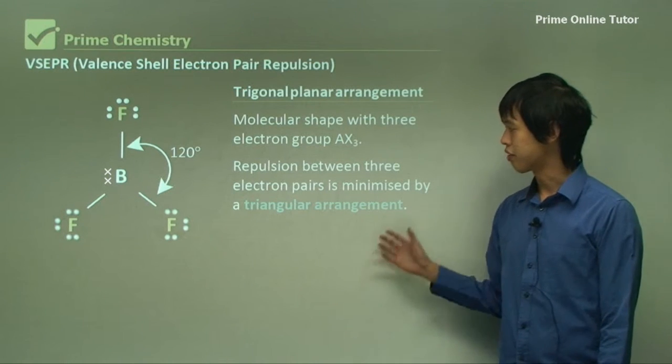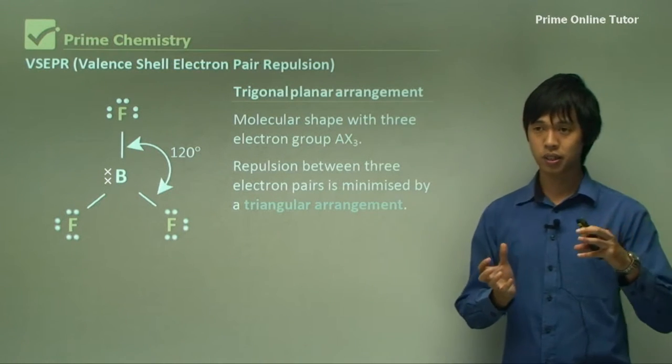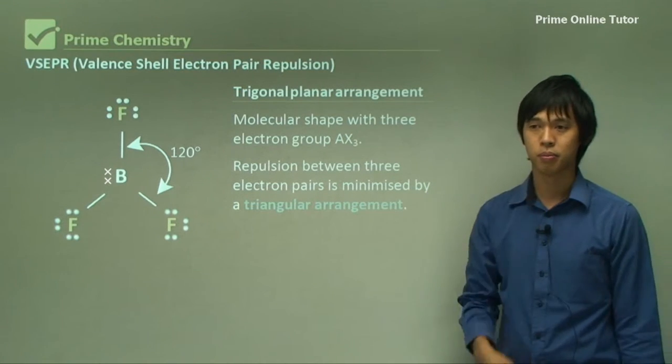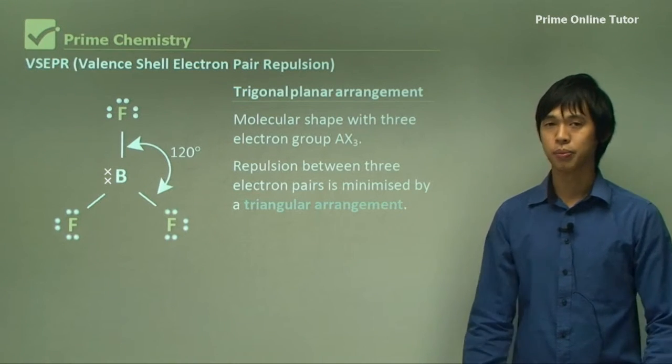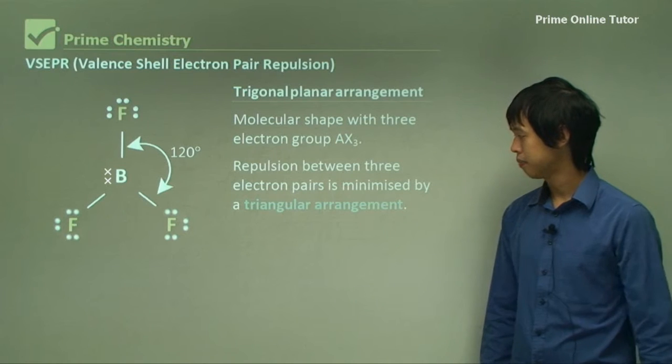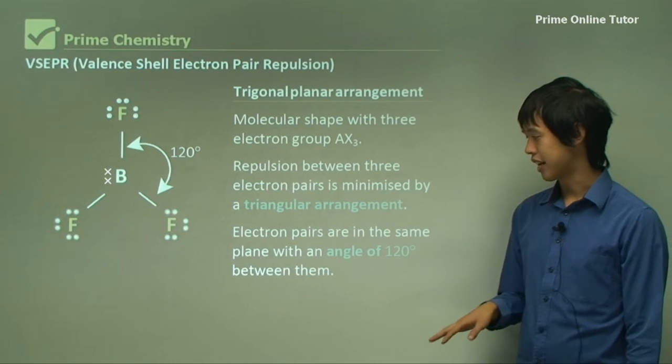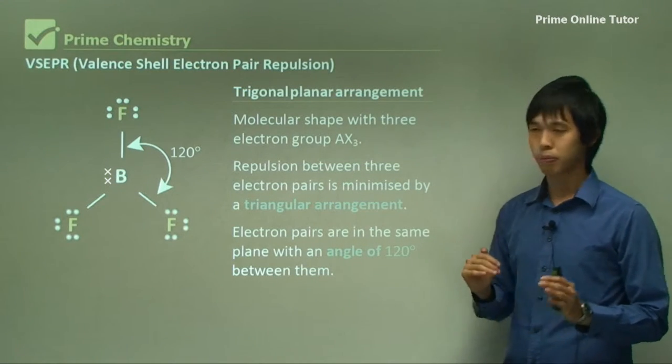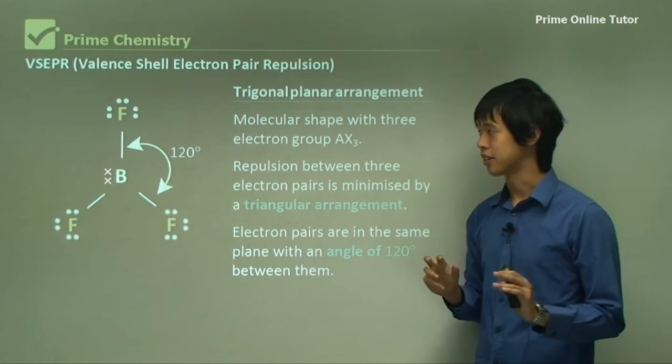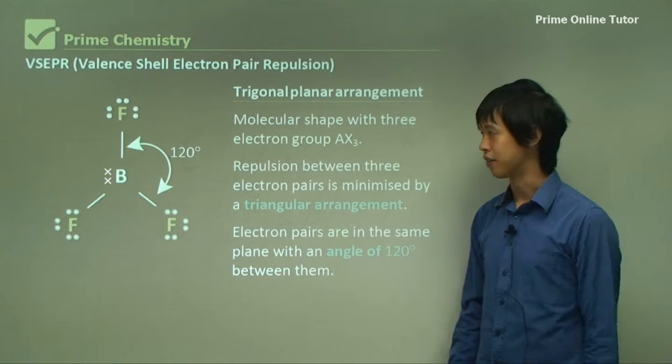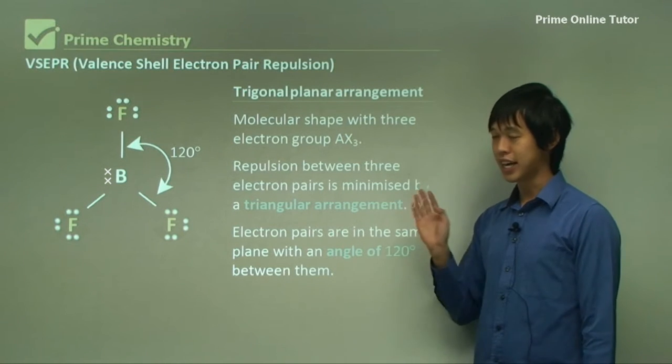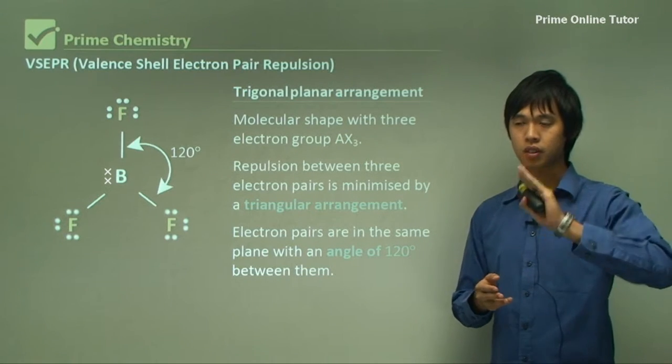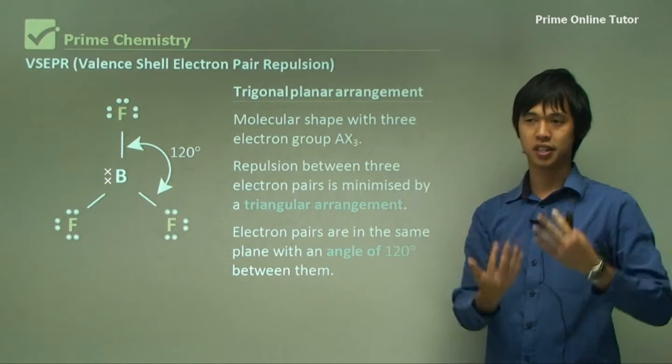So repulsion between three electron pairs is minimized by a triangular arrangement. So the three electrons kind of put themselves together in like a triangle-type shape. And that's the minimum repulsion effect. So the electron pairs are in the same plane, as you can see. They're all along the board here with me, at an angle of 120 degrees. So 1 third of a circle, essentially, which is the minimum amount of repulsion.